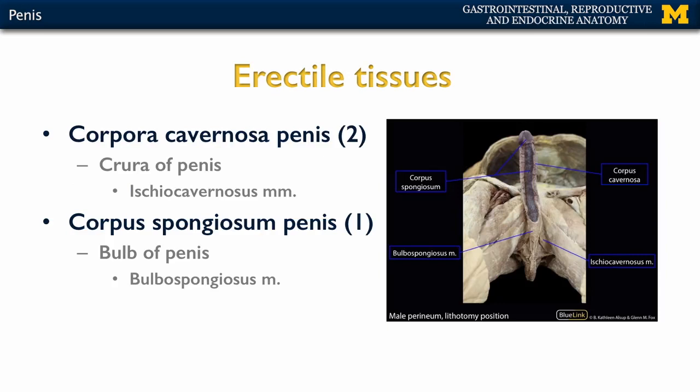Let's talk about those erectile tissues. In this particular image the skin has been removed, so we're looking at the erectile tissues directly. Erectile tissue is composed of various sinuses. These sinuses can fill with blood in order to achieve what's referred to as erection, or what we call engorgement.